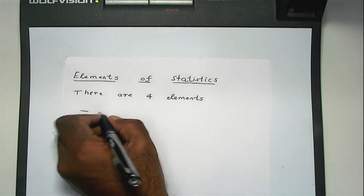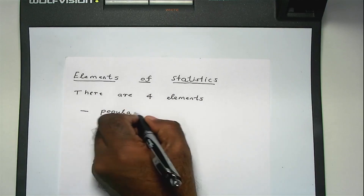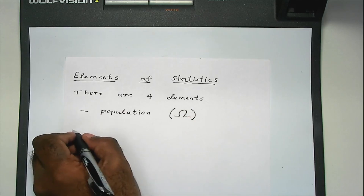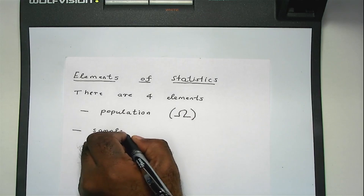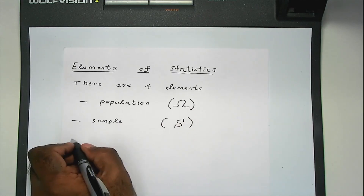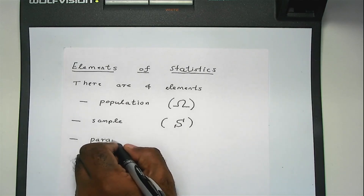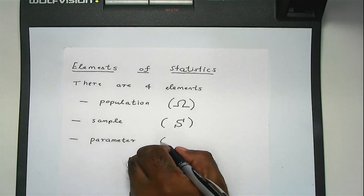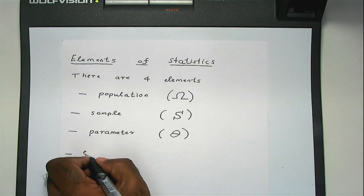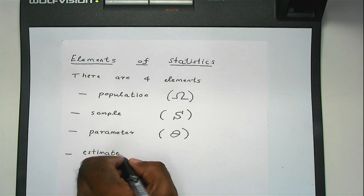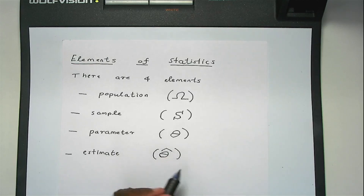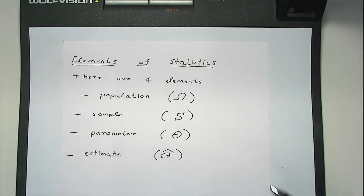The first one is known as the population and is denoted by the mathematical notation capital Omega. The second one is known as the sample and is denoted by capital S. The third one is the parameter and is denoted by theta. And the fourth one is the estimate and is denoted by theta with a hat on top of it — people call this theta hat.